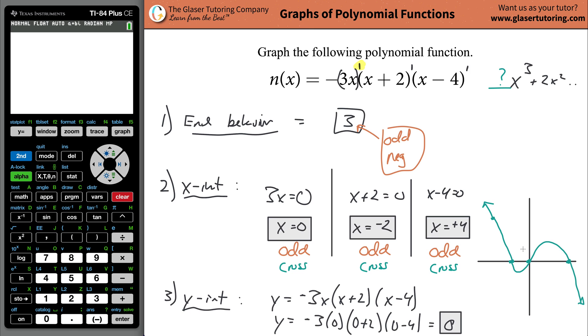You can get a nice picture by using your calculator. Let's see if we're in the ballpark. Negative 3x, open the parentheses, do x plus 2, close the parentheses, open the parentheses, then do x minus 4. Let's see what we get. Hit zoom and go standard.